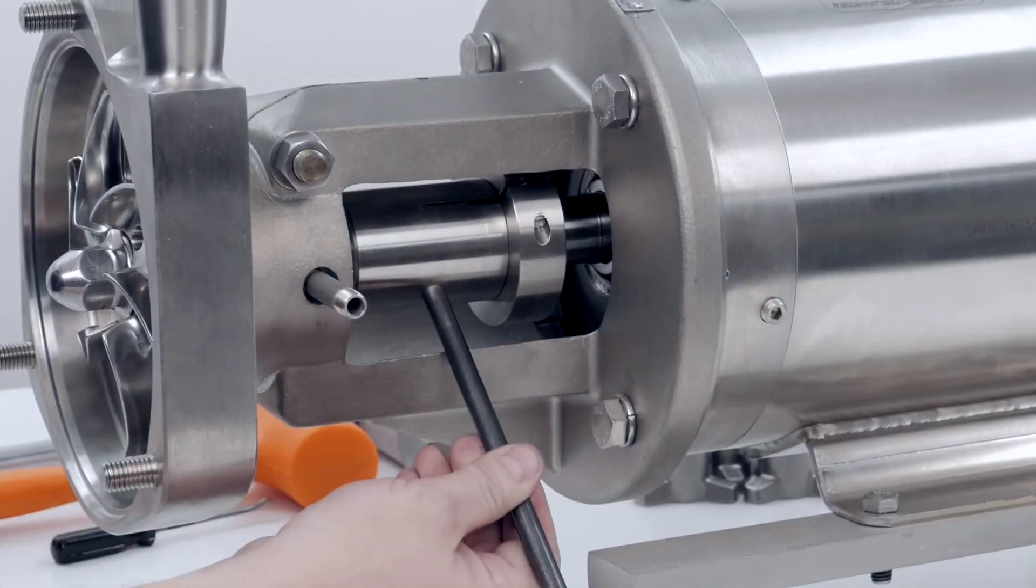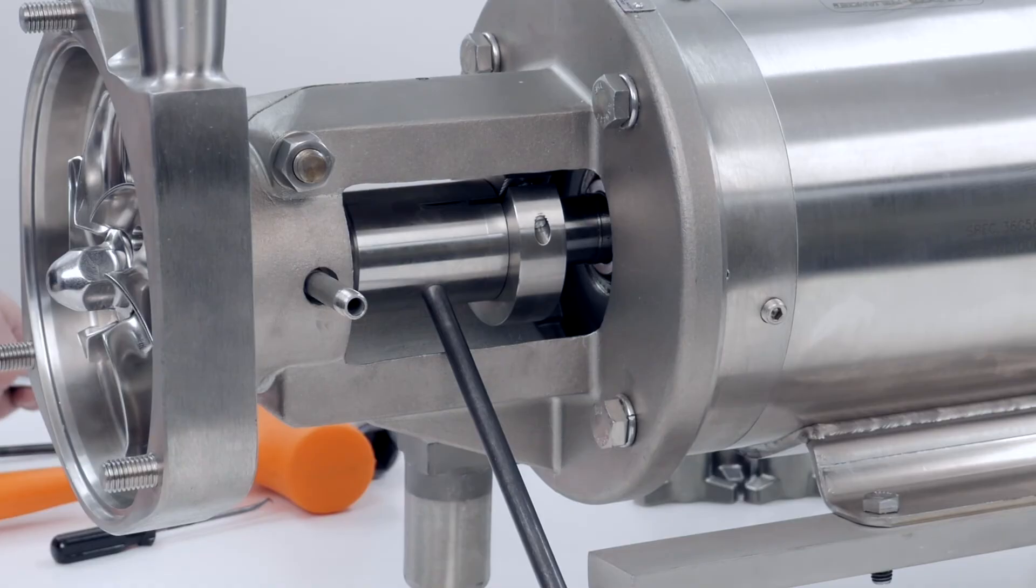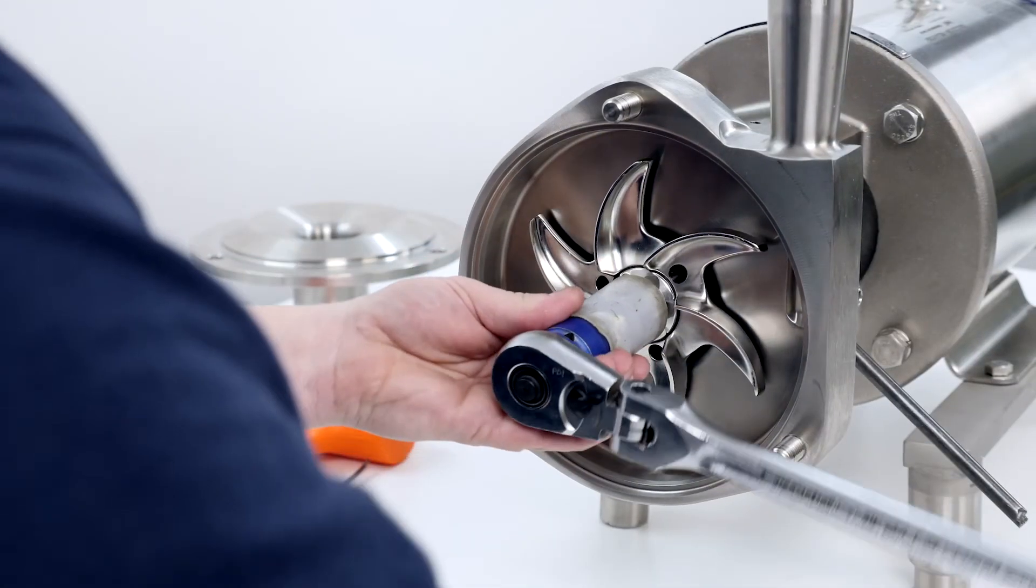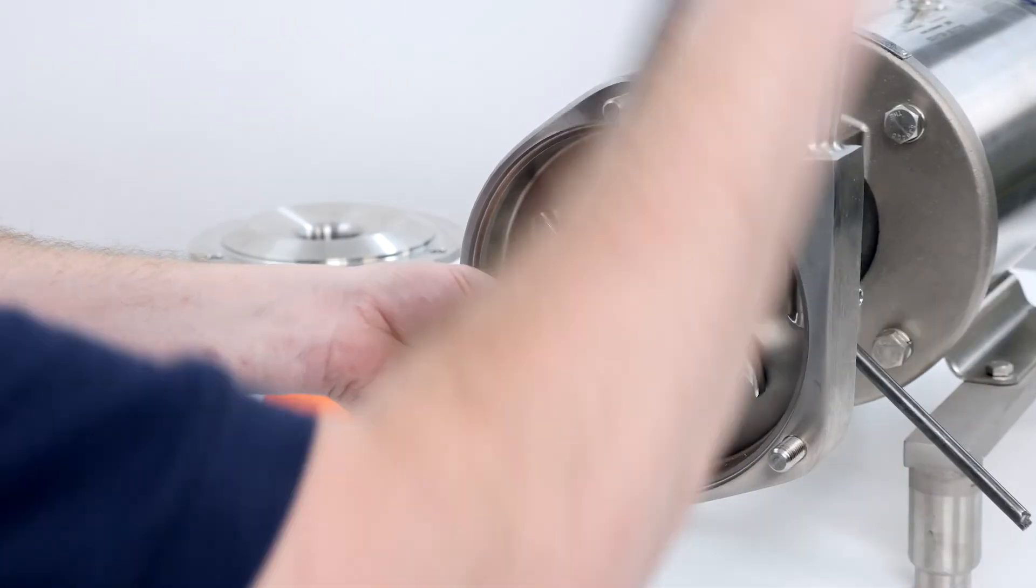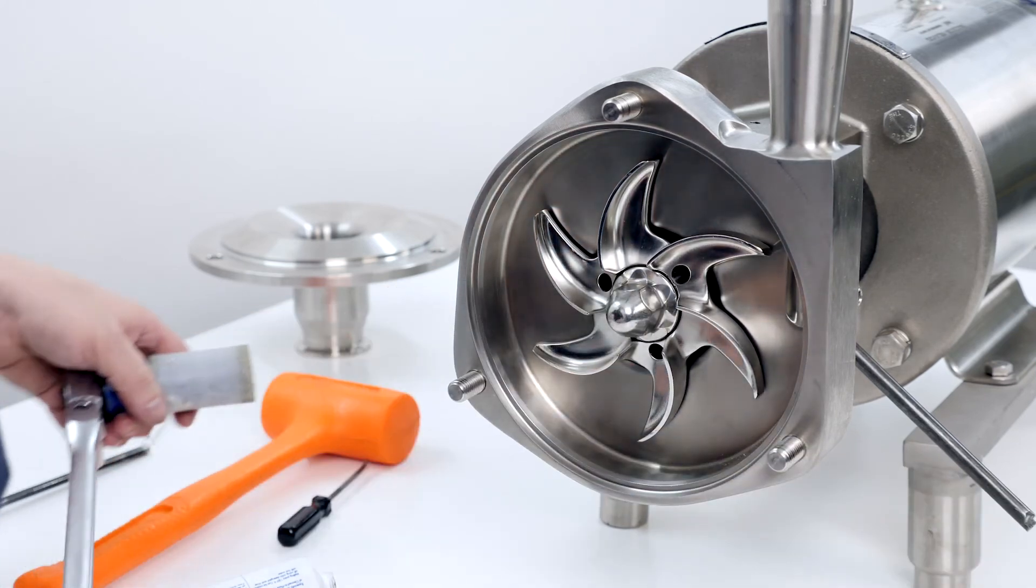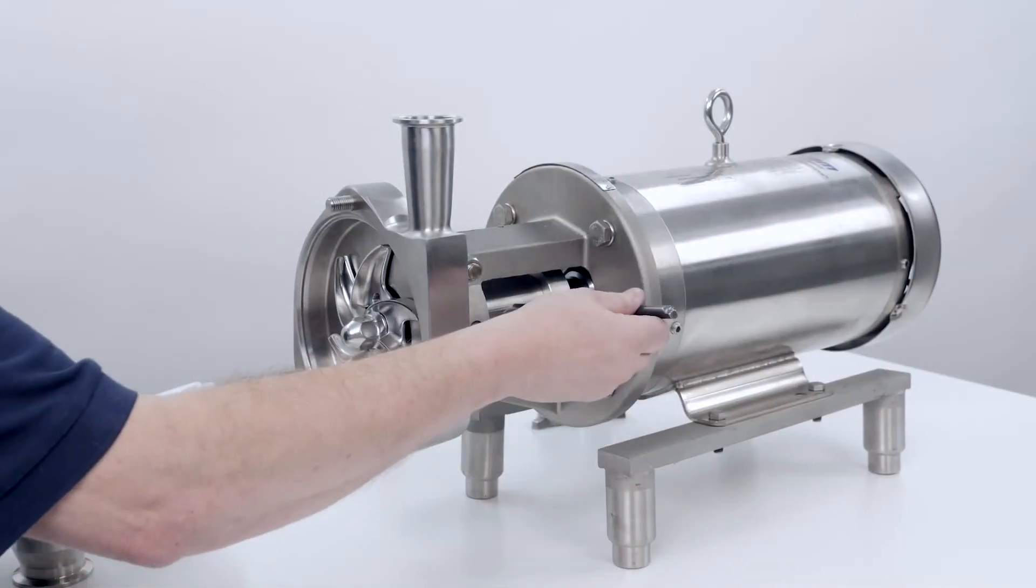Place a 3/8 inch rod in the shaft hole to stop shaft rotation. Use a socket with a torque wrench and tighten the impeller nut to proper torque. Remove the rod.